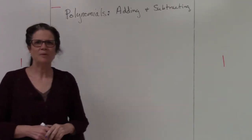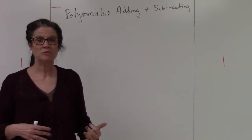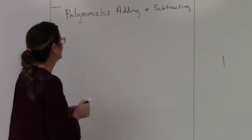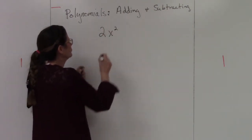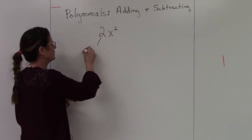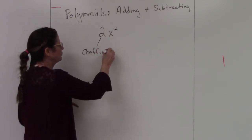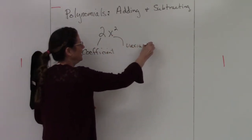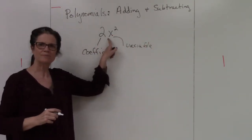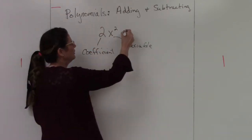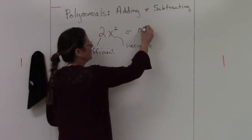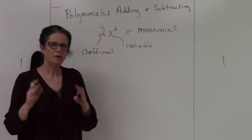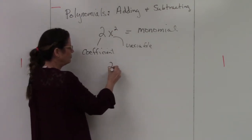In this video we're going to talk about polynomials — adding and subtracting them. A polynomial is made of terms. A term has a coefficient, which is the number in front of the variable, and a variable connected through multiplication. A one-term polynomial is called a monomial.